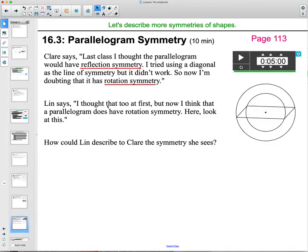So then Lynn says, I thought that too at first, but now I think the parallelogram does have rotation symmetry. Here, look at this. And Lynn drew this picture or this diagram. So how could Lynn describe to Claire the symmetry that she sees? So what did she do here? Why does she draw this on? And what is she trying to explain to Lynn? So go ahead and pause the video and think about this question and write down how she could describe this to Claire.